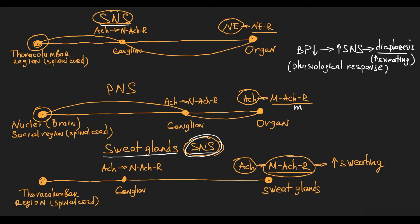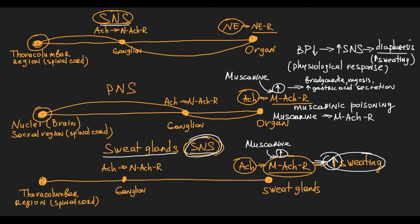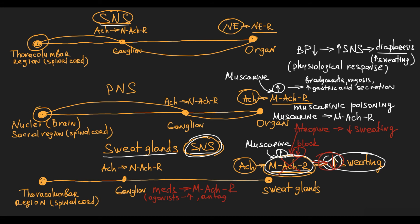For example, muscarine acts on muscarinic acetylcholine receptors, causing excessive stimulation of organs innervated by the parasympathetic nervous system, manifesting as bradycardia, miosis, increased gastric acid secretion, etc. But it also causes excessive sweating, because sweat glands have muscarinic receptors. Atropine decreases sweat gland activity because it blocks muscarinic acetylcholine receptors. So in terms of medications, muscarinic agonists increase sweat gland activity and muscarinic antagonists decrease it.